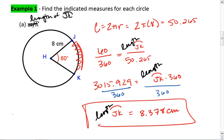I know that the measure of arc JK is actually very straightforward. It's just a straight 60 degrees. So the measure of JK is 60 degrees. The length of JK is 8.378 centimeters.